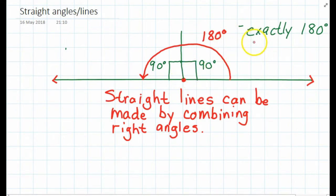That straight lines or straight angles are always exactly 180 degrees. It can never be more or less. And we measure the angle from here all the way across to the other side, and it should measure exactly 180 degrees.